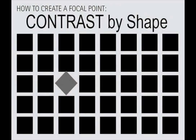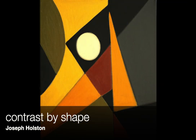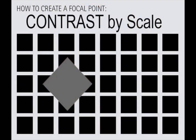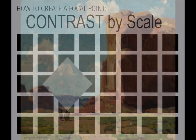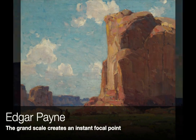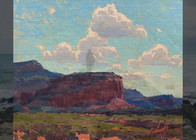Next is contrast by shape. We can control the focal point simply by varying the shape within another larger group of shapes. I love how artist Joseph Halston accomplishes this in his artwork. Last in the contrast category is contrast by scale — making one image drastically larger than others, as in these paintings by Edgar Payne.